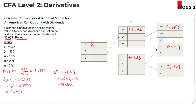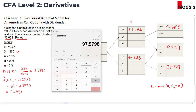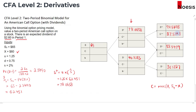Now we can calculate the payoff of the call option if we wait for it to expire in period 2. The call option payoff at expiration is the maximum of 0 and the share price minus the exercise price. For S++, which is 97.5798 and greater than 60, the intrinsic value is 97.5798 minus 60, which is 37.5798. For S+- at $58.5479, the option is out of the money, so the payoff is 0. Similarly, for S-- at 35.1287, this is also out of the money, so that's 0.